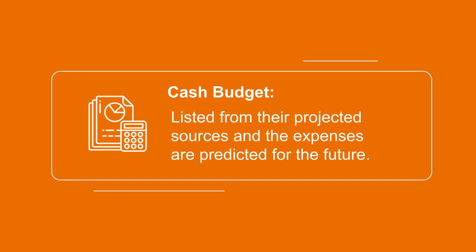A cash budget is where cash receipts are listed from their predicted sources and the expenses are predicted for the future. A cash budget is used to ascertain if a company's operations will provide sufficient funds to meet cash requirements for the future. It will also warn management when they will require additional funds.